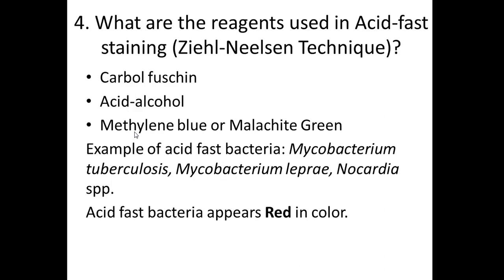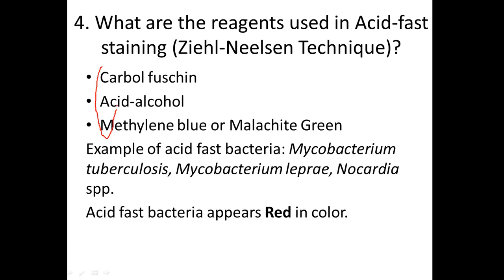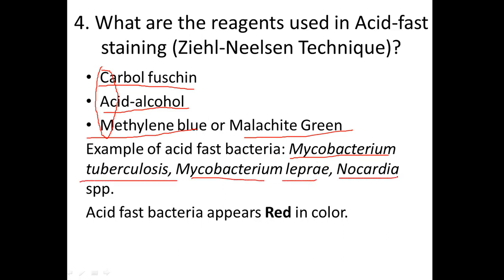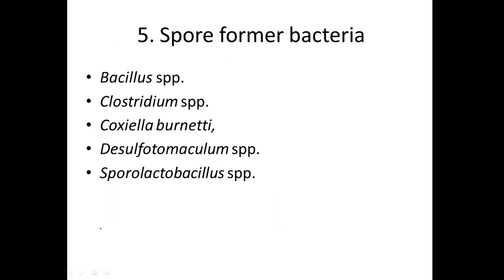They will also ask about acid-fast staining — specifically, what reagents are used. The mnemonic is CAM: C stands for carbol fuchsin, A stands for acid-alcohol, and M stands for methylene blue or malachite green. The examples of acid-fast bacteria are Mycobacterium tuberculosis, Mycobacterium leprae, and Nocardia species. Acid-fast bacteria stain red in color.